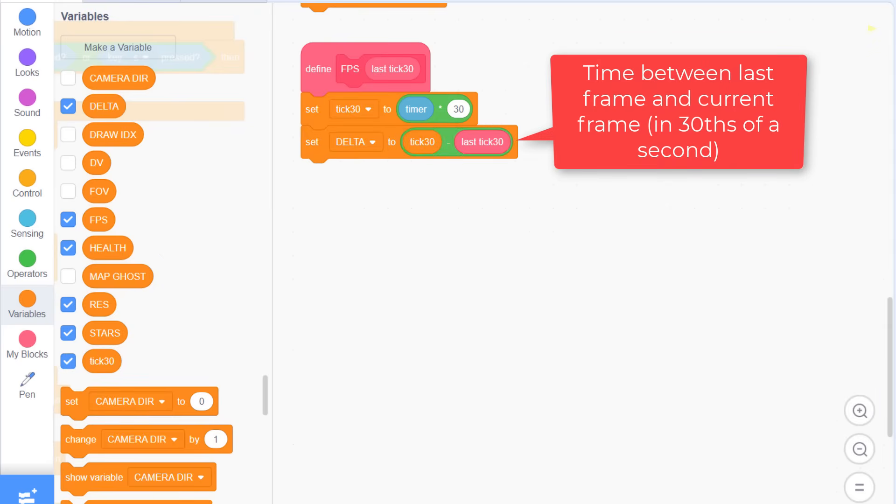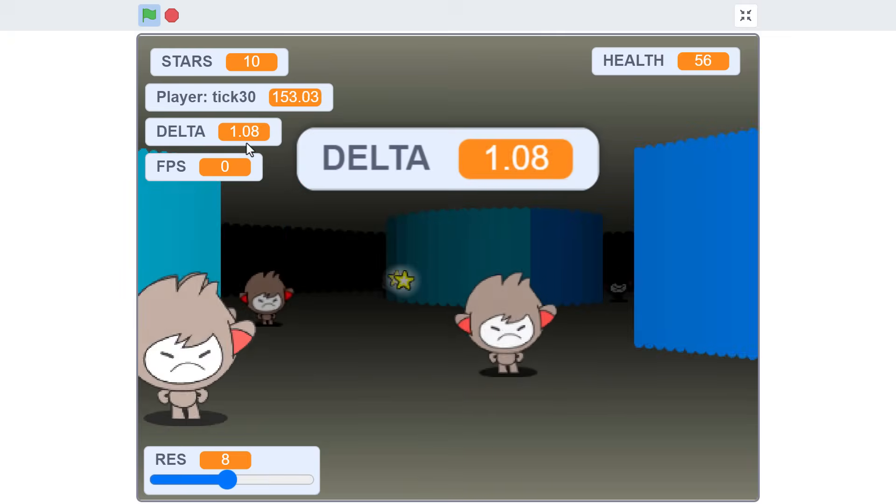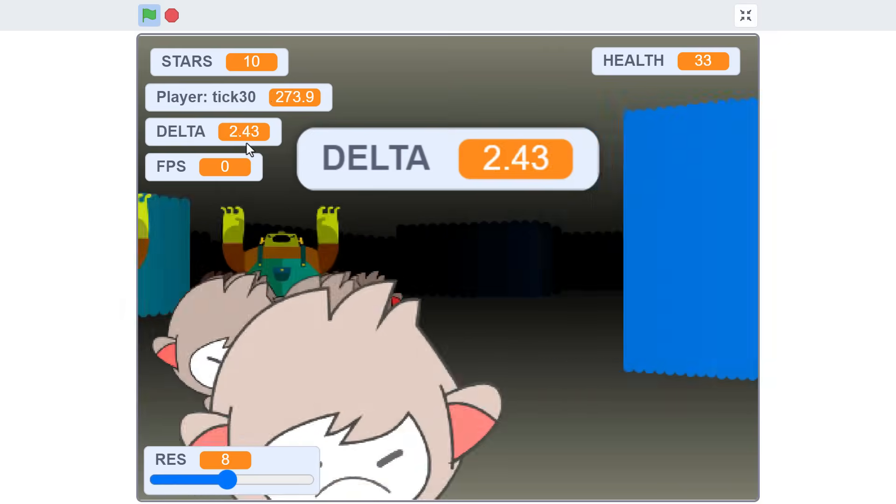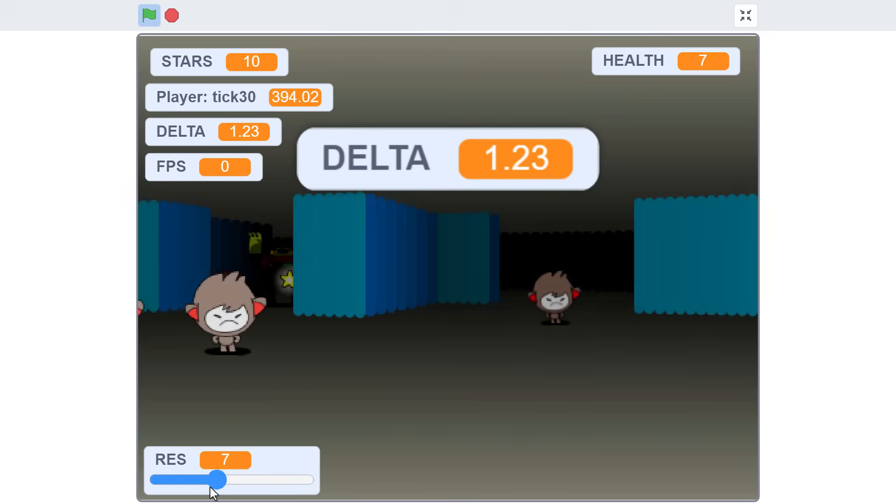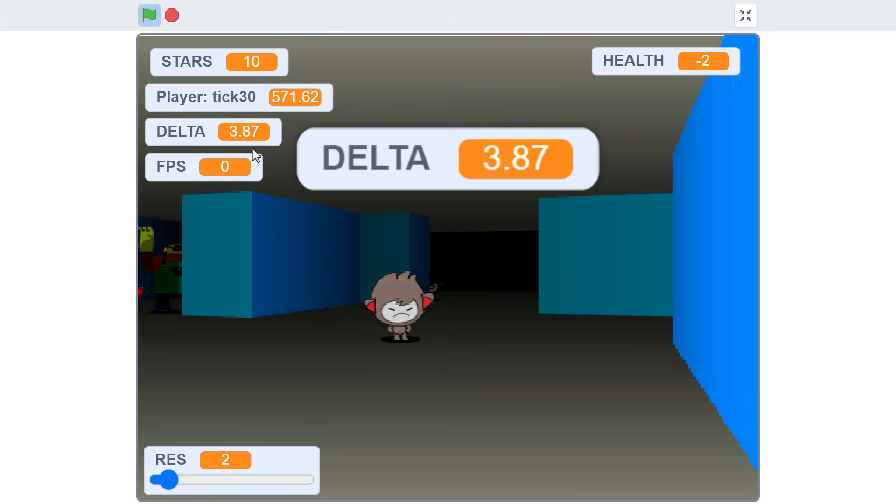Hey, we can see this working. When the project is running at full speed, this delta should read 1. That's because it's taking exactly 1 frame to draw the screen. But, if I up the resolution. Ah, now we can see it's taking over 4 screen update cycles to draw each screen.